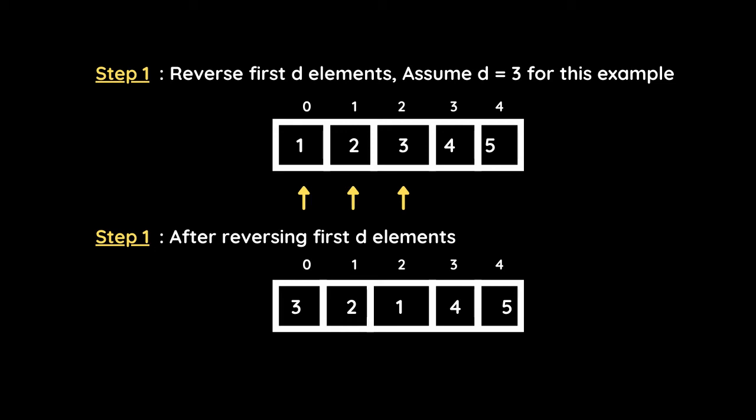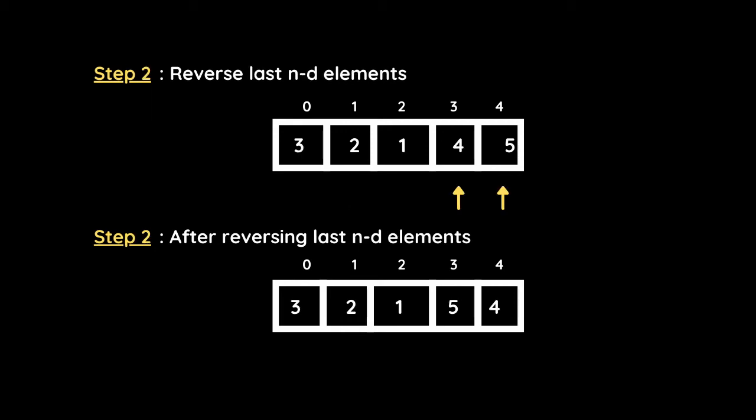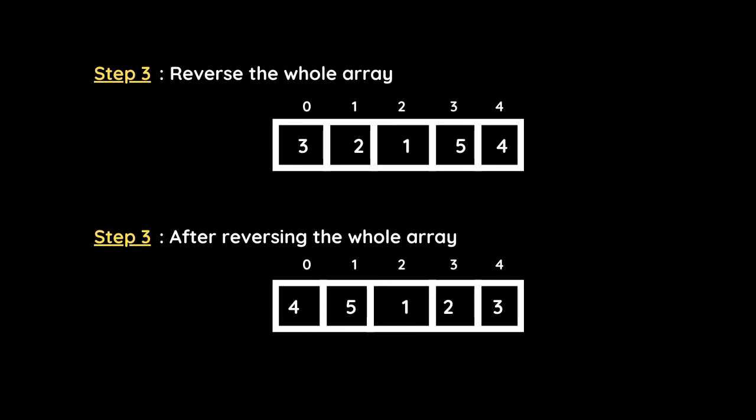In step two, we reverse the last n minus d elements. Since d is 3 and n is 5, five minus three gives us two, so we reverse the last two elements. The last two elements are four and five, so when we reverse them our array becomes three two one five four.